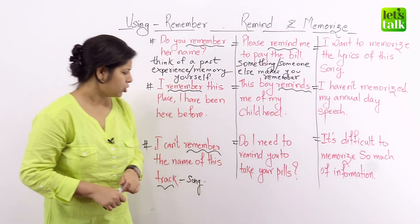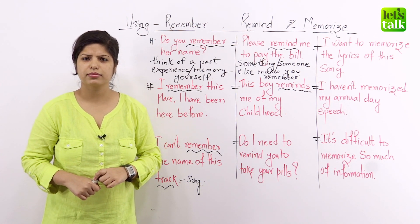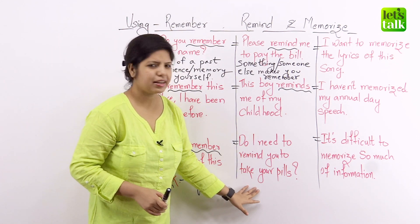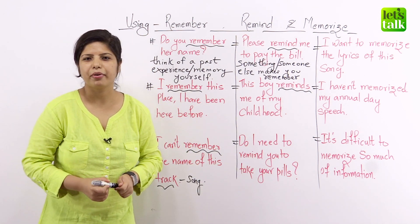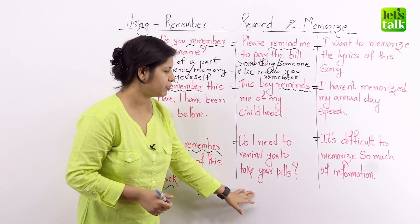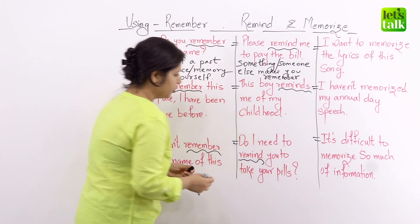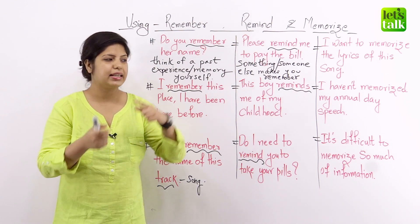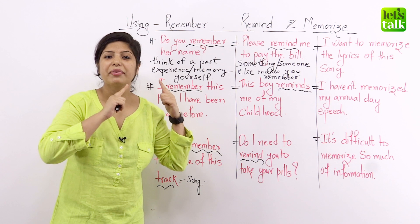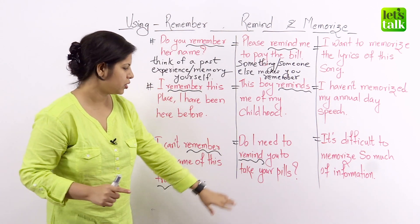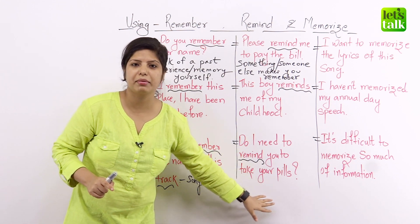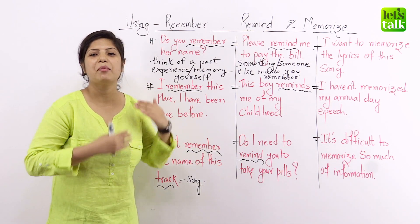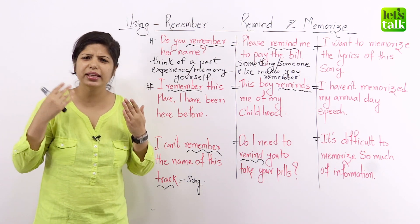And then: Do I need to remind you to take your pills? There are a lot of people who tend to forget to take their medicines, and if it's a family member or maybe your child, you may use this kind of sentence. You're asking the person, 'Do I need to remind you?' because it's an external force — someone else or something else that needs to remind that person to do something, in this case to take their pills. So remind is used only when something else or someone else makes you think of a memory.